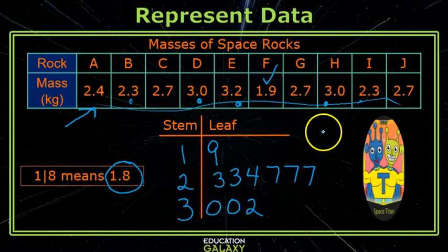Now as I look at this stem and leaf plot, I see that 1.9 is my least value, and 3.2 is my greatest value.